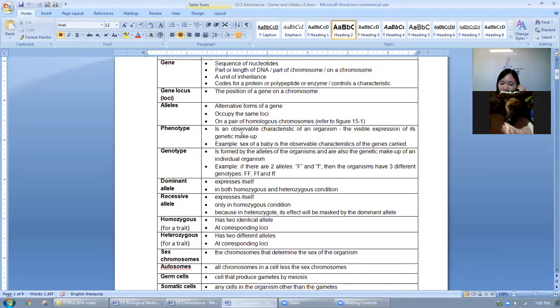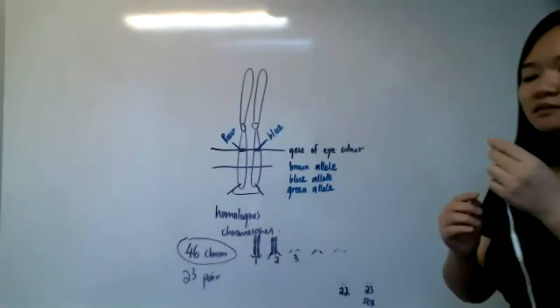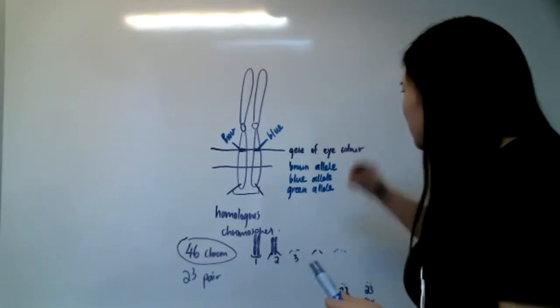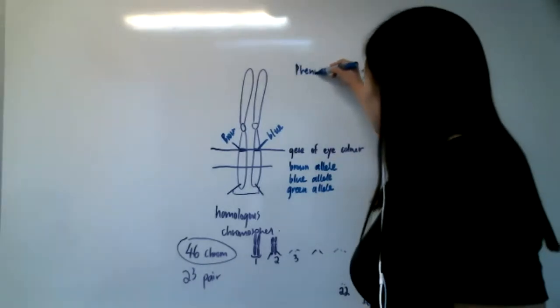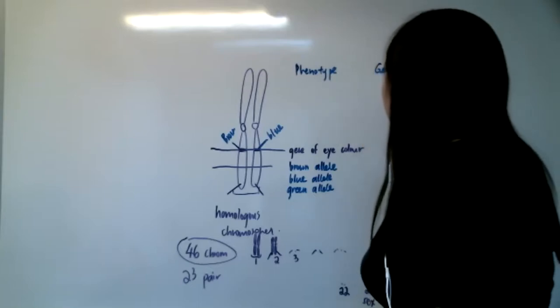Let's look at phenotype. Phenotype is an observable characteristic of an organism. As opposed to genotype - genotype is formed by the alleles of the organism and is the genetic makeup of the individual organism. So, basically remember, phenotype as opposed to genotype.